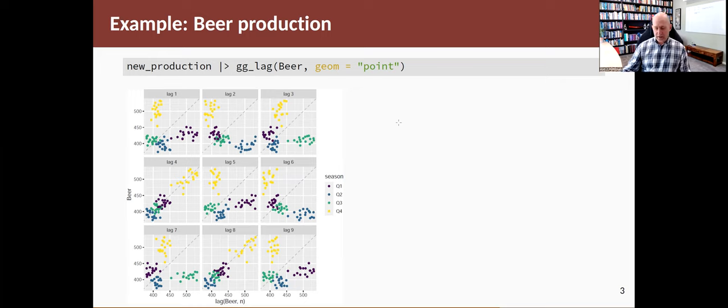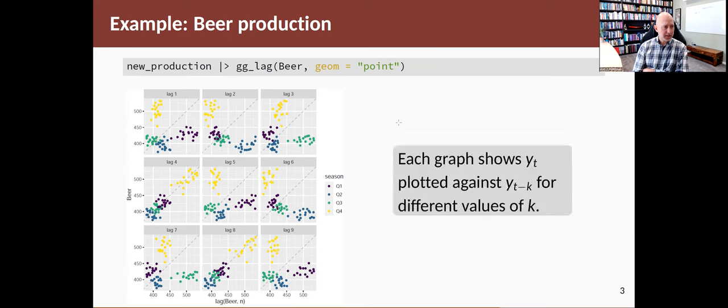These are labeled lag one to lag nine. These show the beer data plotted against lags of the beer data. That is, for each graph, it's showing yt plotted against yt minus k for different values of k.